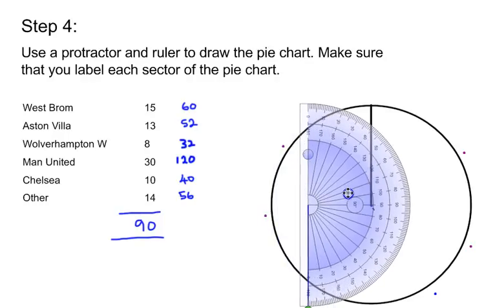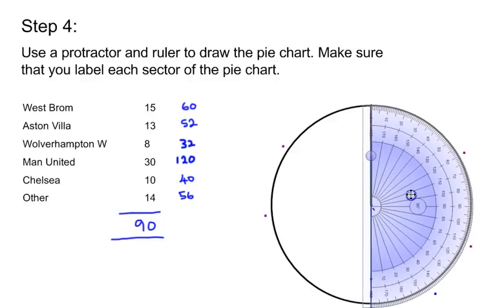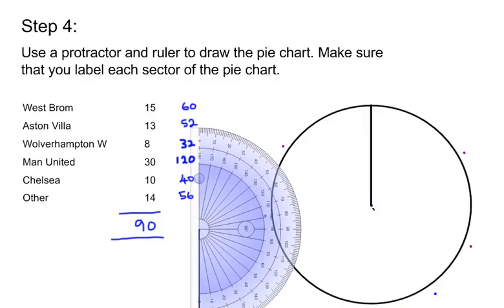Line the center of the protractor up with the center of the circle. The first sector, West Brom, is 60 degrees. Mark with your pen or pencil where 60 is on the outside scale, counting from zero, not from 180. Then make that mark, slide your protractor off the paper, take your ruler, and draw a straight line from the center of the circle to the mark you just made.